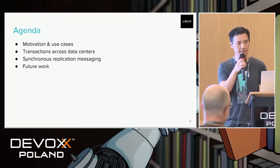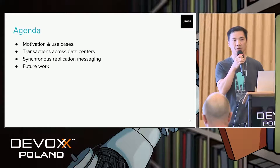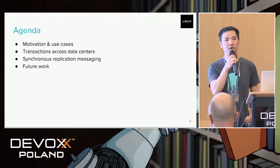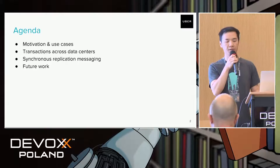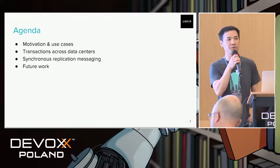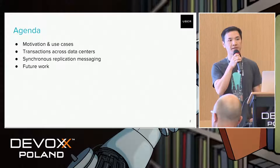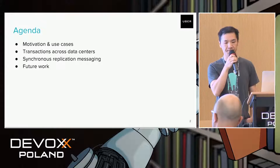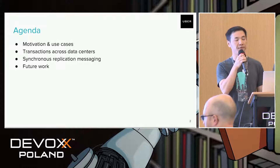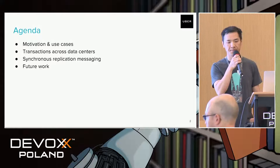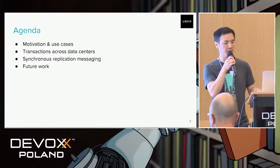Here is the agenda for today. We will first talk about the motivations and our use case for synchronized replication across multiple data centers. Then we will discuss some of the challenges for transactions across data centers for a typical storage system. Then we will talk about our setup and some of the failure scenarios we want to support, and last but not least we will discuss some of the future work on our roadmap.